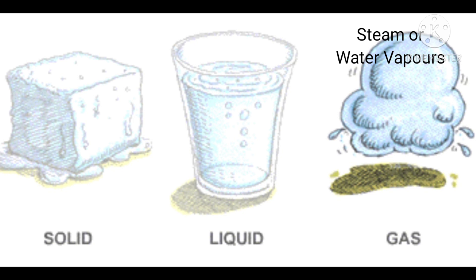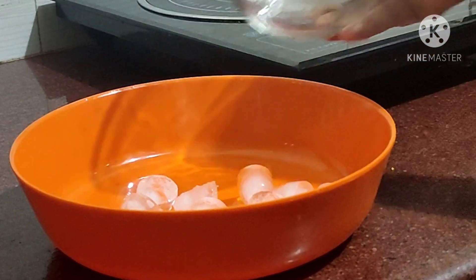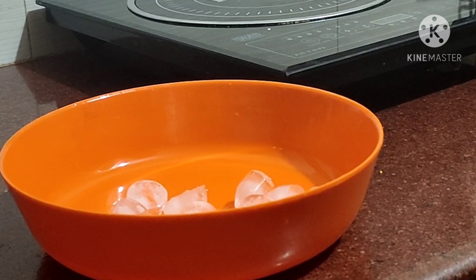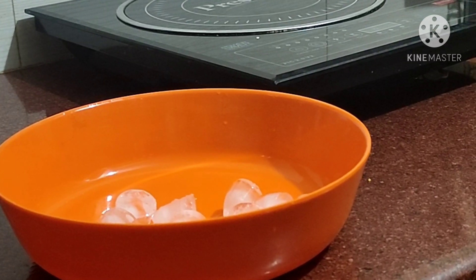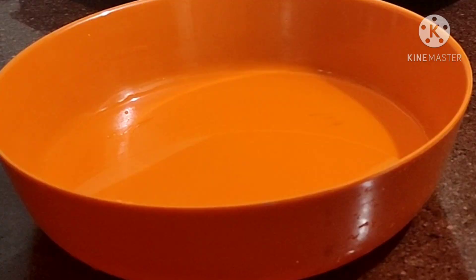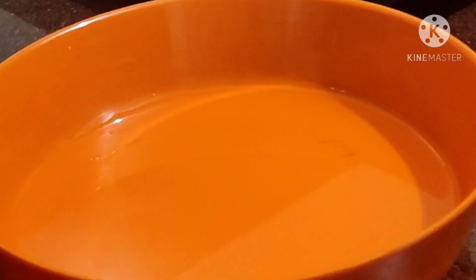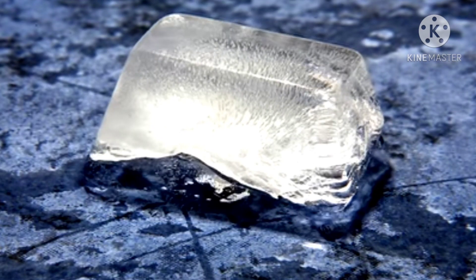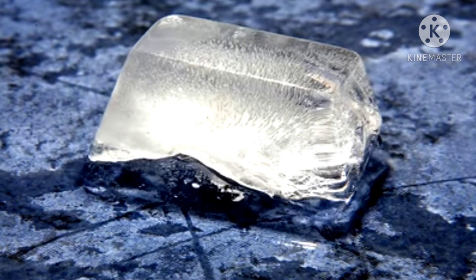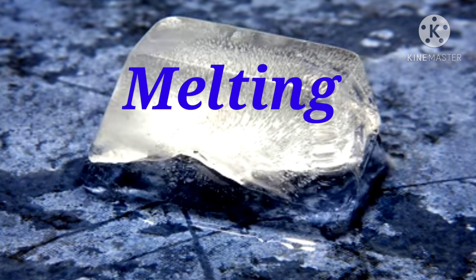To understand this, let's do an activity. We will take a few ice cubes in a plate and keep them for half an hour. We will observe that the ice cubes have melted and turned into water, that is the liquid form. This change from solid to liquid is called melting.